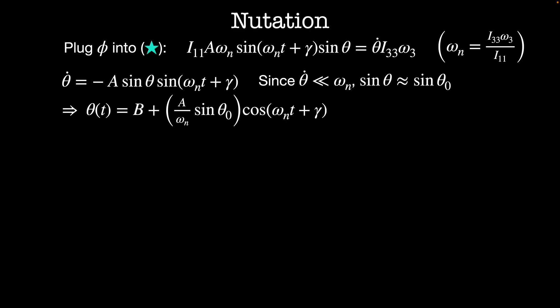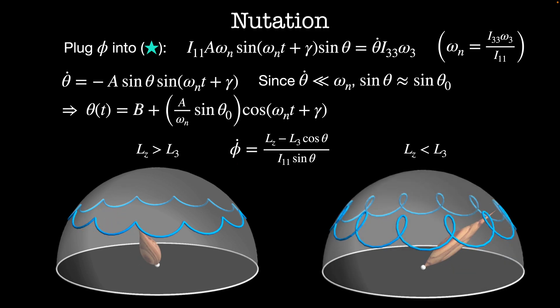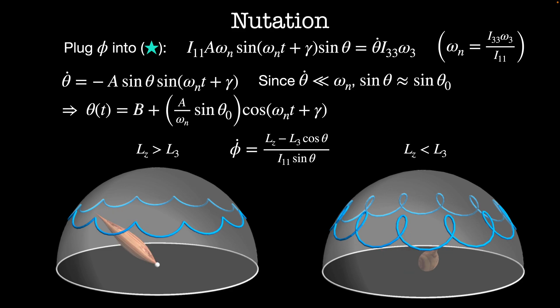We've now solved for theta, phi, and psi in terms of the physical parameters of our system. What does the motion look like? When L_z is greater than L3, phi-dot cannot change sign, so theta always proceeds with a single sign — phi moves steadily in one direction while theta oscillates between two values theta 1 and theta 2. If L_z is less than L3, the sign of phi-dot can change, meaning phi moves both forward and backward while theta oscillates. Today we've discussed the math and physics behind a rotating heavy top. This is the last video in the current classical mechanics series — if there are other topics you'd like to see, let me know in the comments. Thanks for watching, and I'll see you next time.